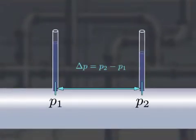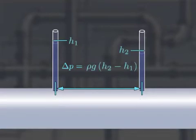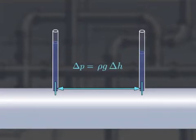Therefore, the difference in pressure between two points, or delta p, can be determined from the change in liquid height, or delta h, between two manometers.